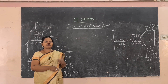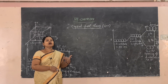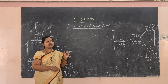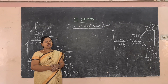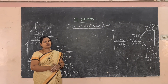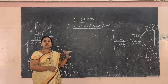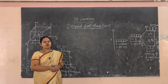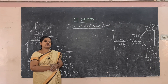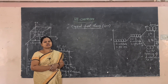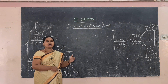Crystal Field Theory assumes that the bonding between the central metal atom and the ligand is purely ionic — that is, there is electrostatic attraction between the central metal atom and the ligand. If the central metal atom is neutral, it is assumed as point charges. If the central metal atom is positive, it is treated as dipoles.